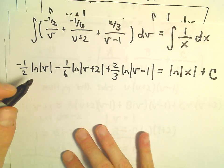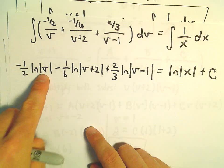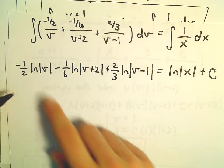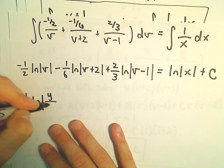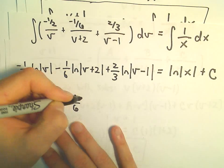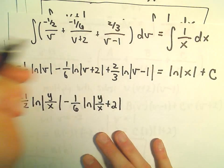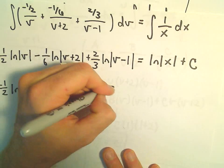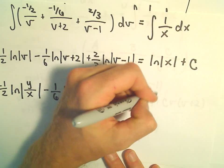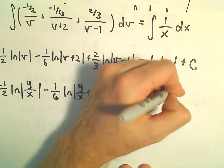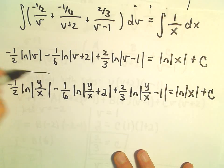We could use properties of logarithms to combine all the logarithms — I'll leave that as an algebra exercise. Now substituting back v = y/x, we get: -1/2·ln|y/x| - 1/6·ln|y/x + 2| + 2/3·ln|y/x - 1| = ln|x| + C. That is our general solution.